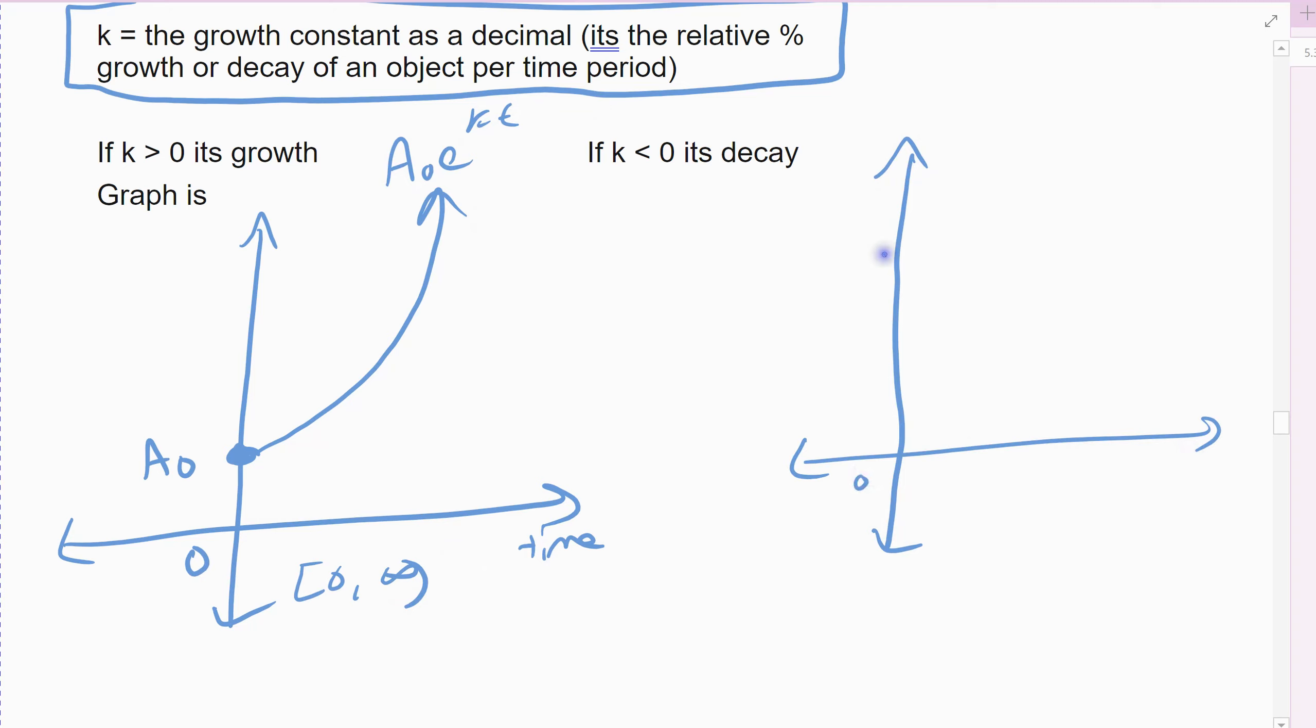The decay model would be the exact opposite of that. We still start at zero, so we'd start with our initial value up here, but this time we come down and approach the zero, approach that y equals zero. Again this is still time, and this would be my A naught e raised to the negative kt, the decay model. Increasing growth, decreasing decay.